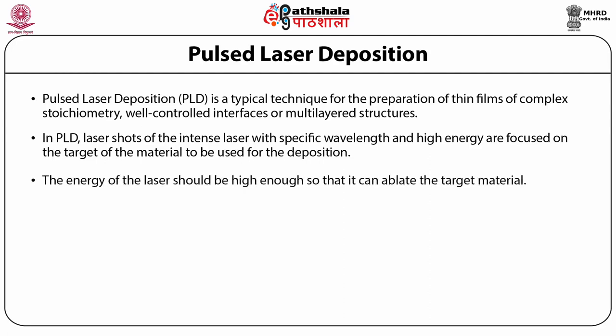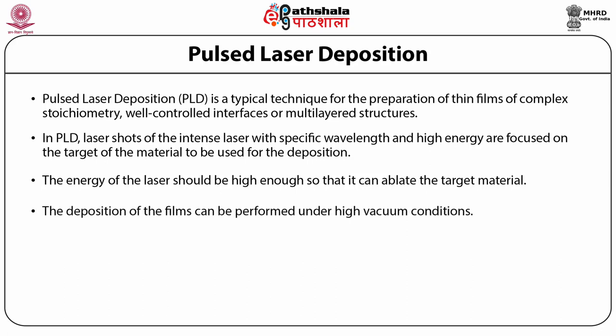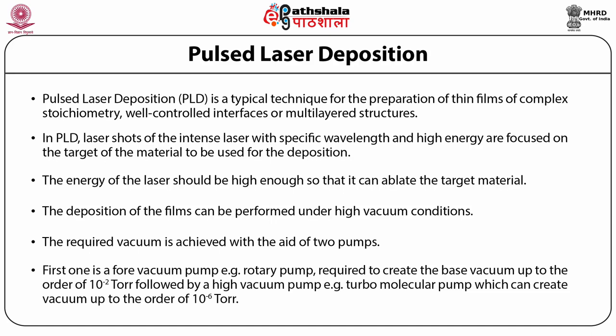The energy of the laser should be high enough so that it can ablate the target material. The deposition of the films can be performed under high vacuum conditions. The required vacuum is achieved with the aid of two pumps: a fore vacuum pump — the rotary pump — to create base vacuum up to the order of 10⁻² torr, followed by a high vacuum pump — the turbo molecular pump — which can create vacuum up to the order of 10⁻⁶ torr.